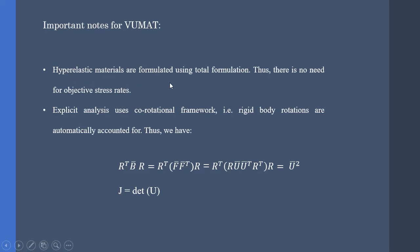Some important notes: we are going to formulate the hyperelastic materials using the total formulation, and therefore we don't need objective strain rates like the Jaumann or Green-Naghdi rates. Also, explicit analysis uses a corotational framework — in other words, the rigid body rotations are already included in the material parameters. Therefore we are going to use these relations for our VUMAT; in other words, we are going to use the stretch tensor instead of the deformation gradient tensor.